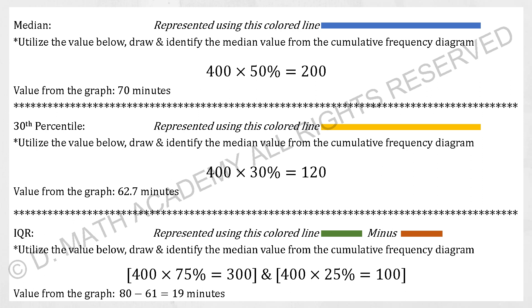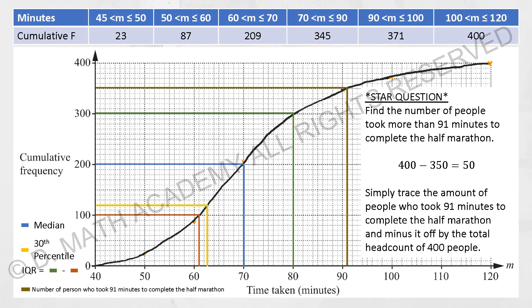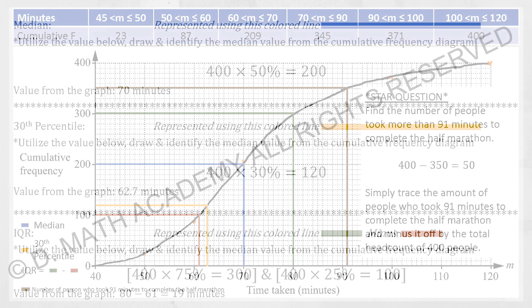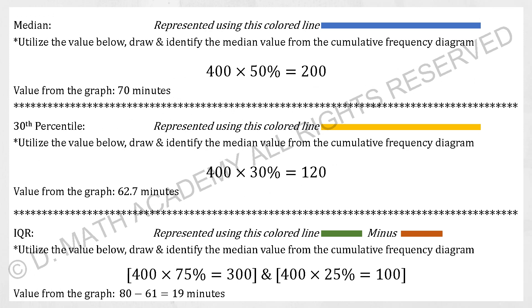And 400 times 25%, I get 100. So the 300 value will get you 80. And the 25% value will get you 61. So the difference will be 19 minutes.